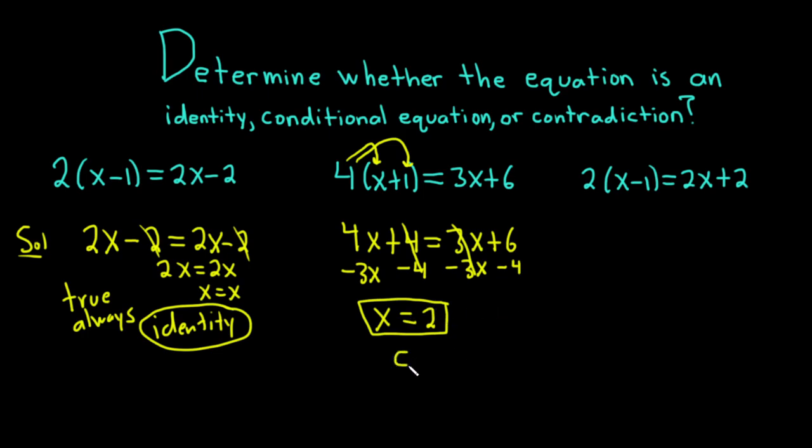So it's true for some, but not all real numbers. Therefore, it's called a conditional equation. Remember, a conditional equation is an equation that is true for some, but not all real numbers in the domain of the variable.